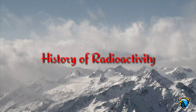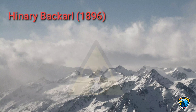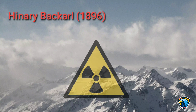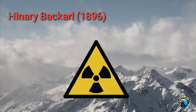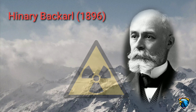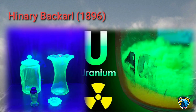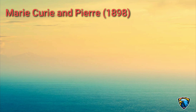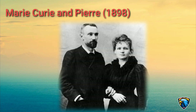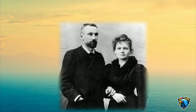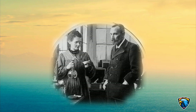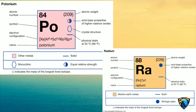History of Radioactivity: Radioactivity was first observed in 1896 by the French scientist Henri Becquerel. He discovered that uranium salt would fog up a photographic plate. In 1898, Marie Curie and her husband Pierre coined the term radiation and radioactivity and went on to discover several new elements, polonium and radium.